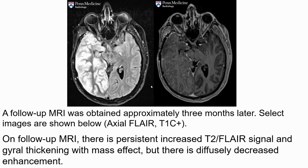This is a follow-up scan of the same case. We can see clearly in the FLAIR image, and a heterogeneous appearance was seen in the T1 contrast study. On the follow-up, there is persistent increased T2 FLAIR signal and gyral thickening with mass effect, and diffusion is usually decreased.